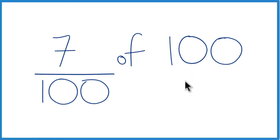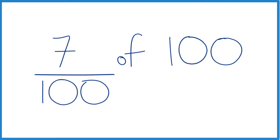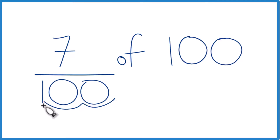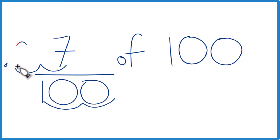It's kind of a special case, but we could also do the math. We'll divide 7 by 100, and then multiply by 100. So you move over 1, 2 decimal places, and then 1, 2 — and we have 0.07.